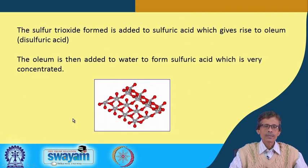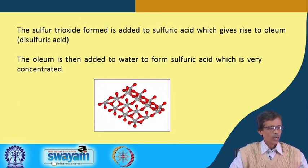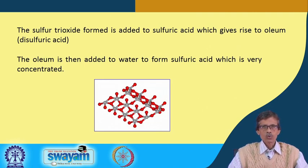The sulfur trioxide formed is added to water to produce sulfuric acid. But if we add SO₃ to already-formed H₂SO₄ — that is, H₂SO₄ plus SO₃ — we get H₂S₂O₇, which is known as disulfuric acid.